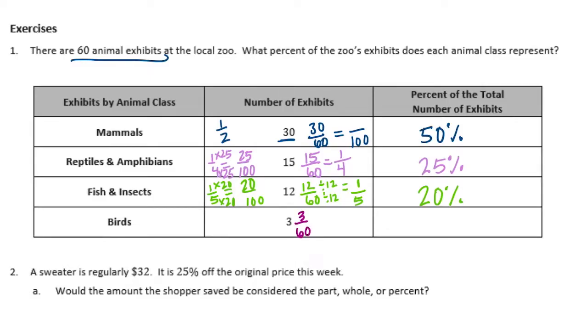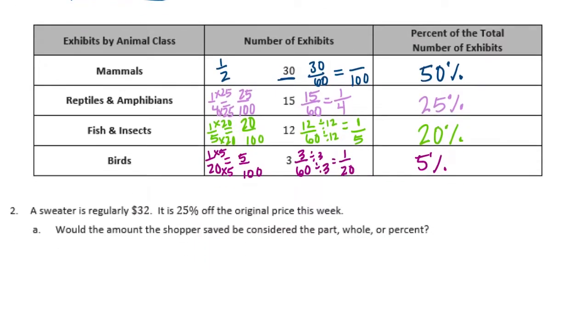And then the last one, 3 sixtieths. I can divide both 3 and 60 by 3. And I'll get 1 twentieth. And if I want to make 1 twentieth into 100, 20 times 5 is 100. So 1 times 5 is 5. And 5 one hundredths is 5%. And we can check by making sure that this all adds up to 100%, which it does.